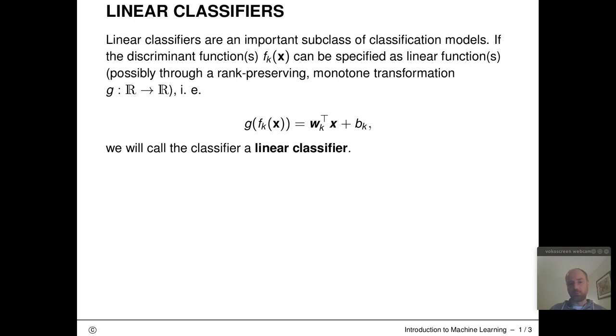In this lecture part, I want to formally define what I mean with a linear classifier. We have already seen visually what this could mean. In one of the previous parts, I defined decision regions and decision boundaries. When I visualize this, we've already seen that some of these decision boundaries looked like lines or hyperplanes.